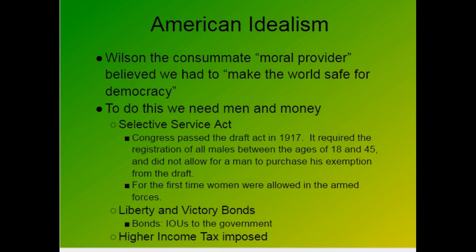Wilson's quote 'make the world safe for democracy' comes from the speech defending the war, saying we needed to protect the democracies of England and France, and to a lesser extent Russia, though they dropped out as we entered. To do all this, they needed both men and money. Money was raised through victory bonds — a loan to the government — and the 16th Amendment enabled a higher income tax, which is still how the government raises money today. The draft, also known as selective service, allowed men to be entered into the army without a volunteer force.